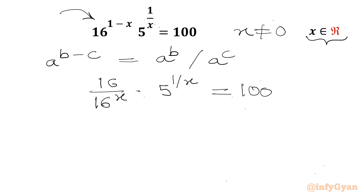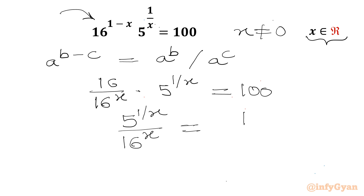Divide this equation by 16. So 5 power (1 over x) divided by 16 power x equal to 100 over 16.